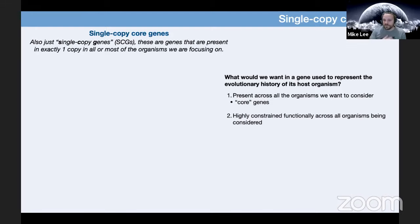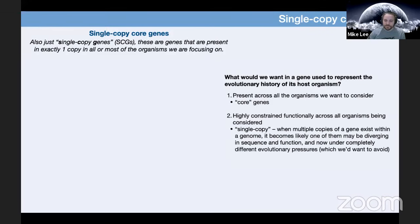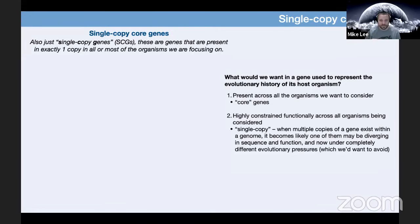We also want the genes used for phylogenomics to be functionally constrained as much as possible, just as with single gene trees. This is where wanting a single copy specifically comes into play. We want genes present in a single copy because when genes duplicate within a genome and multiple copies exist, it becomes more likely that one of them may be evolving under different selective pressures, which would confound our attempts to understand evolutionary relationships at the organism level.